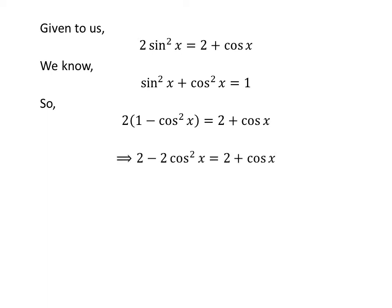Distributing gives us 2 minus 2 times cosine squared of x is equal to 2 plus cosine of x. Cancelling out the common terms on both sides, we get minus 2 times cosine squared of x is equal to cosine of x. Taking cosine of x from the right-hand side to the left-hand side gives us minus 2 times cosine squared of x minus cosine of x is equal to 0.